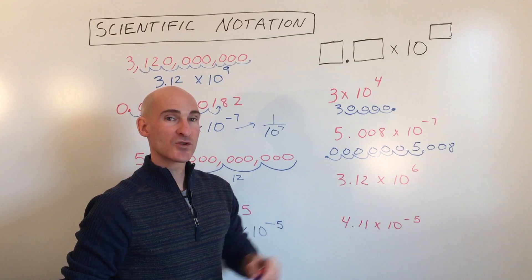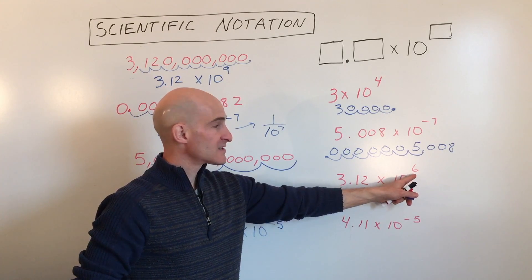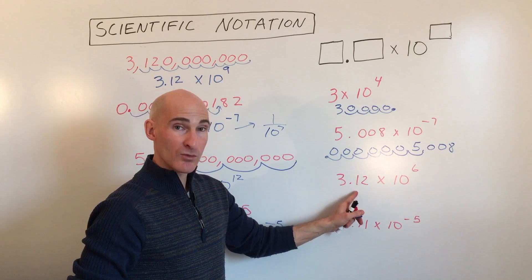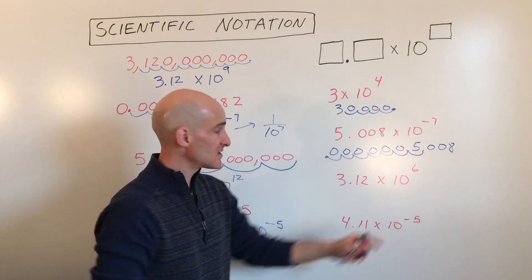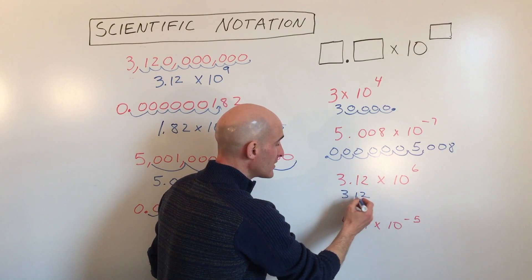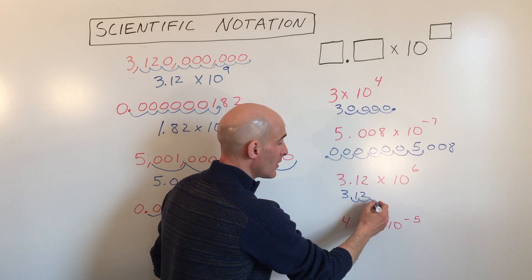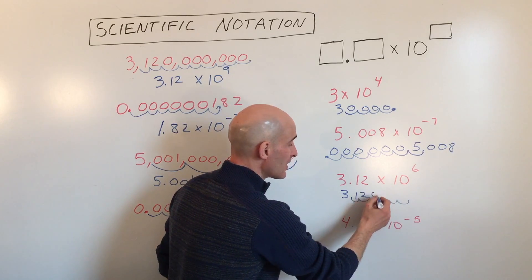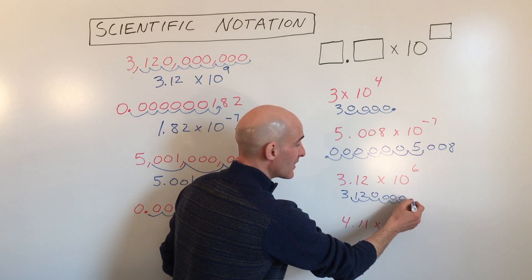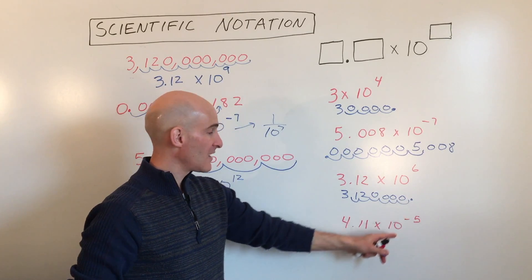10 to the 6th tells us this is a really large number. We move the decimal point in 3.12 six places to the right, filling in placeholder zeros, to get back to the standard decimal number.